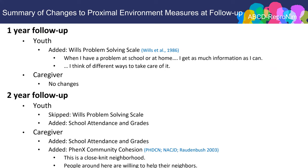At the one-year follow-up for youth, we added the Wills Problem Solving Scale, which has been found related to substance use trajectories and asks about planfulness: 'When I have a problem at school or at home, I get as much information as I can' and 'I think of different ways to take care of it.' At the two-year follow-up, we skipped the Wills Problem Solving Scale and added an instrument for school attendance and grades based on self-report. For the caregiver at two-year, we added the Phoenix Community Cohesion Instrument, which asks about neighborhood closeness and social control: 'This is a close-knit neighborhood' and 'People around here are willing to help their neighbors.'